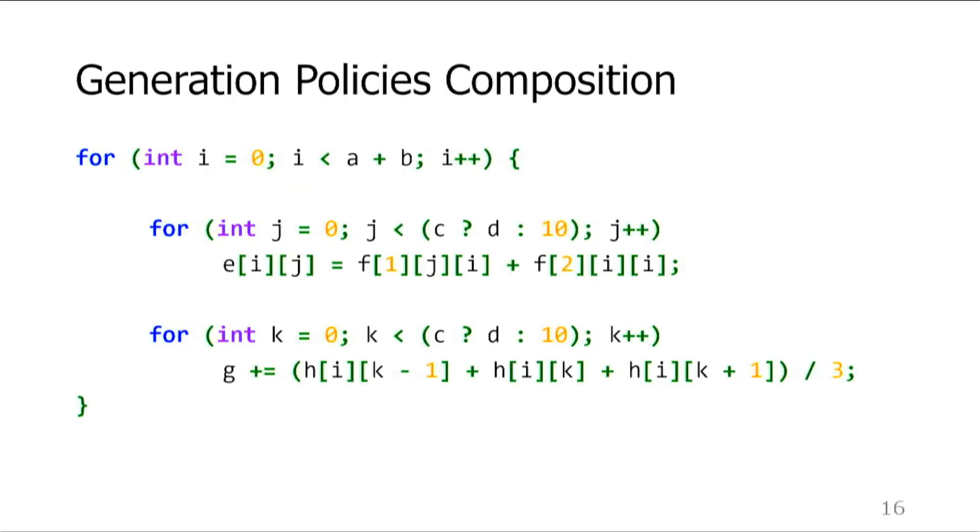As I mentioned earlier, loop generation policies are not mutually exclusive and can compose gracefully. For example, here you can see a fusible loop sequence inside a loop nest. The first one contains a column major and a diagonal traversal of one of the planes of a three-dimensional array. The second one demonstrates a combination of stencil and reduction.